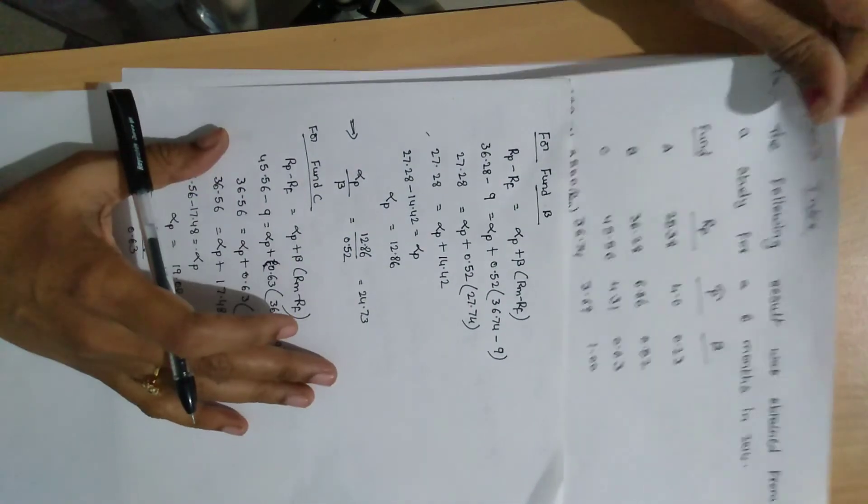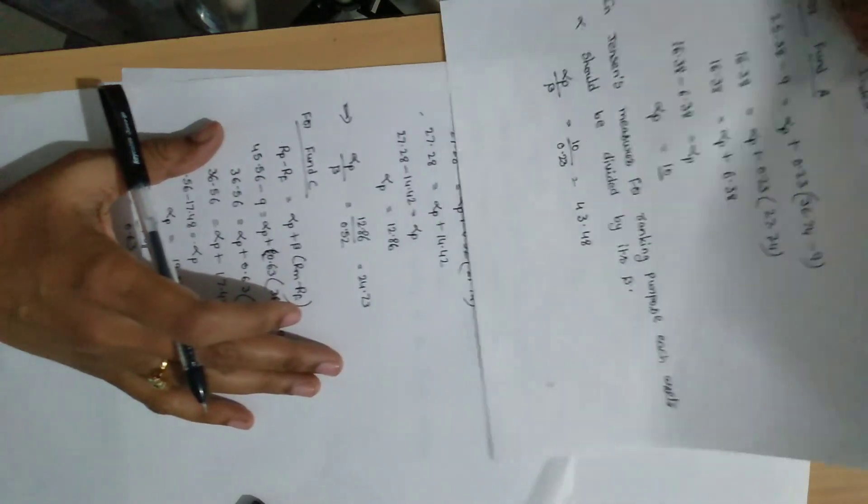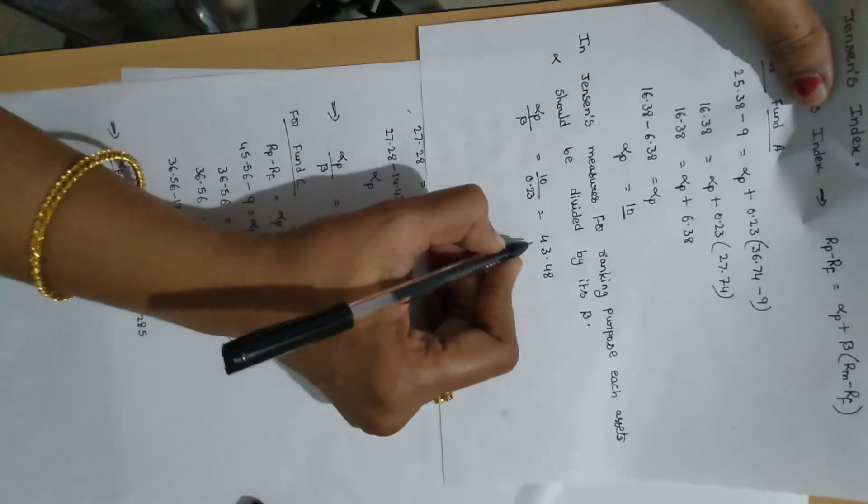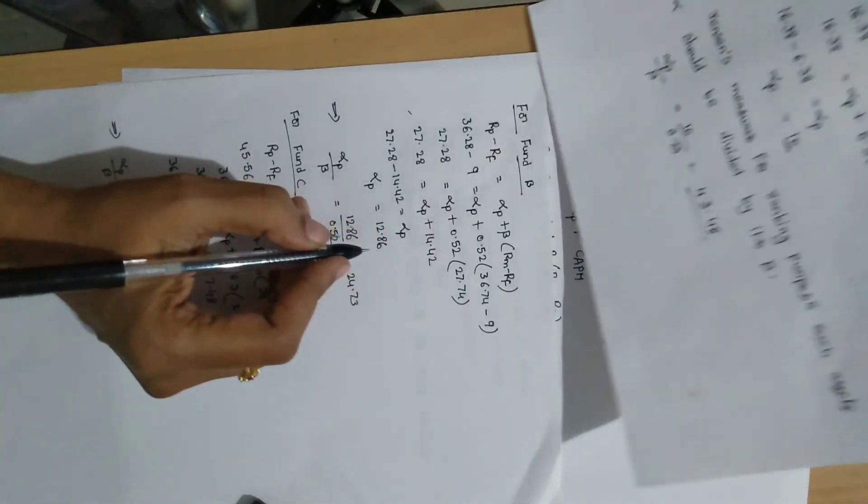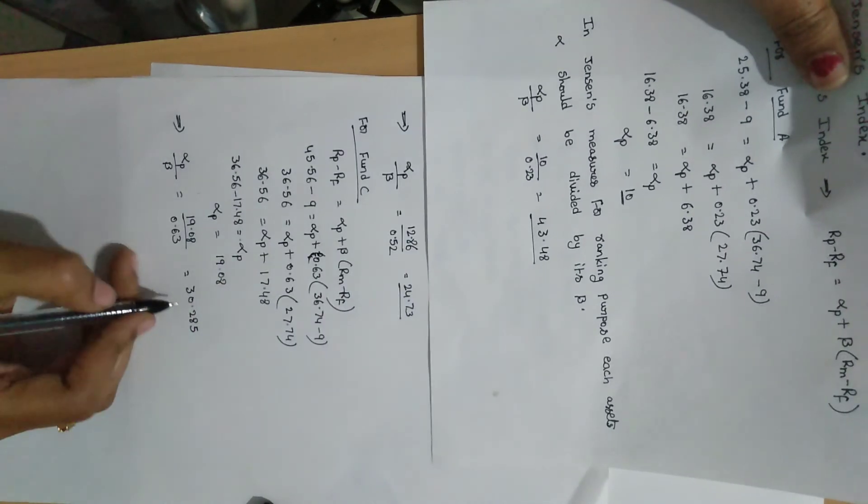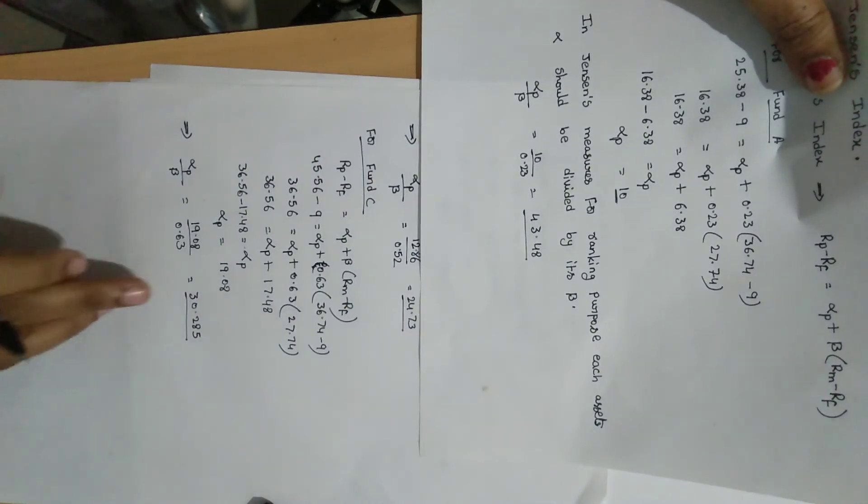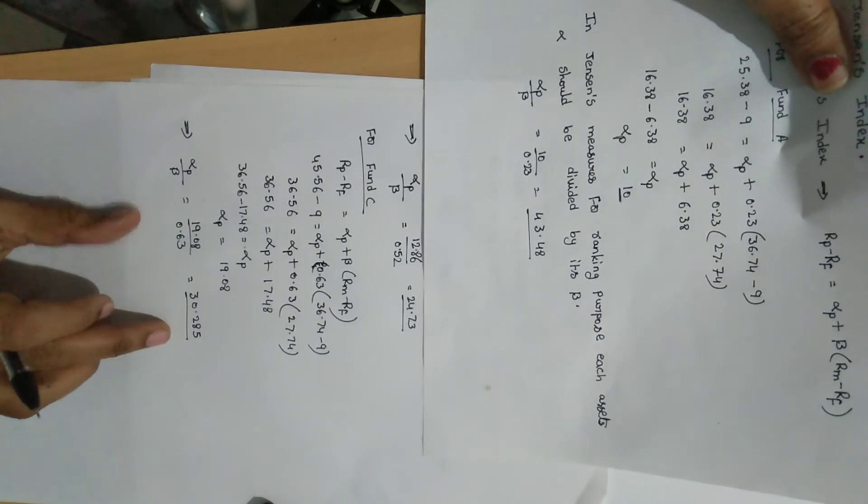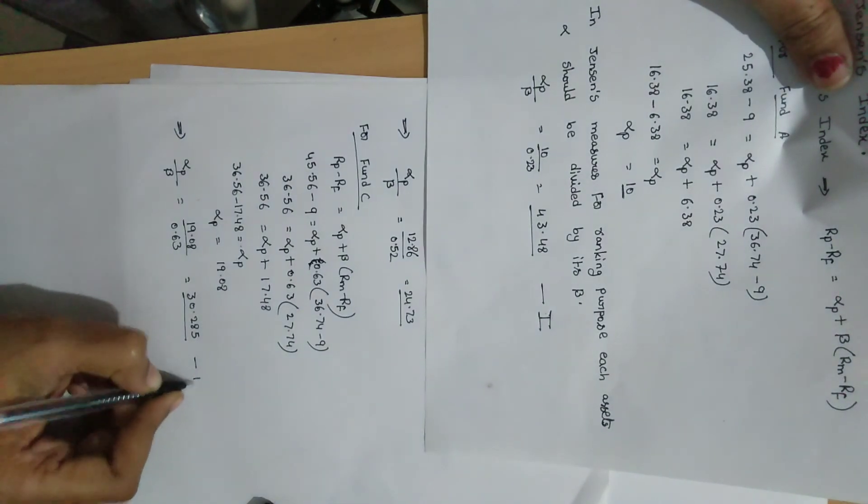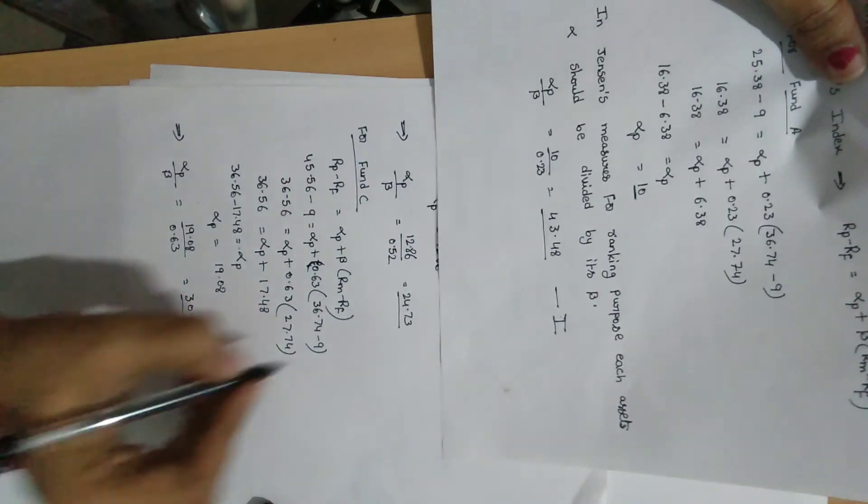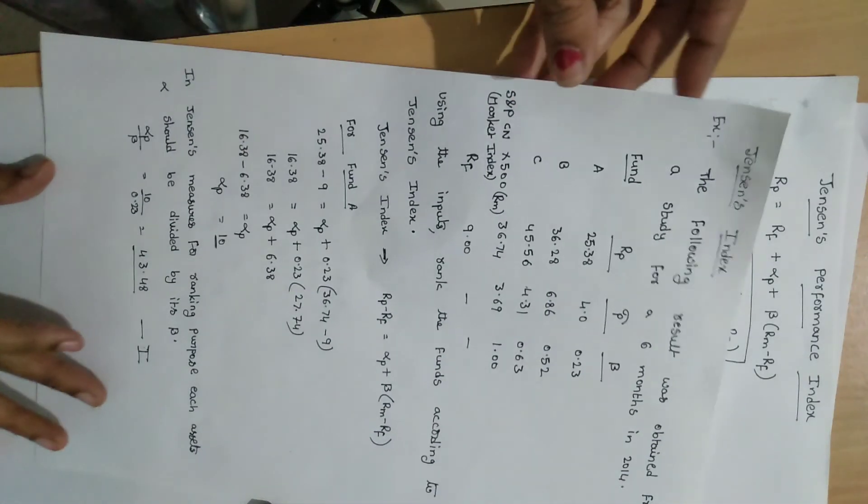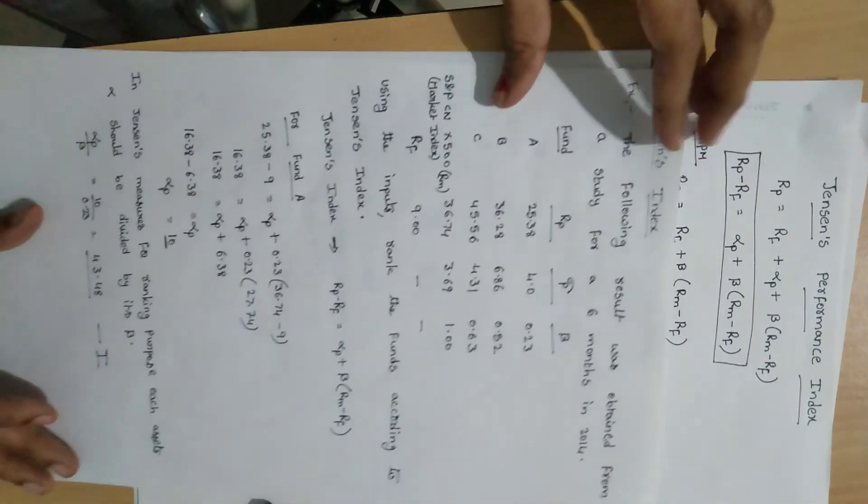Next we have to give the highest rank. First fund A has 43.48, fund B has 24.73, and fund C has 30.285. So we have to give the first rank to fund A, second rank to fund C, and third rank to fund B. So this is the calculation for Jensen's index.